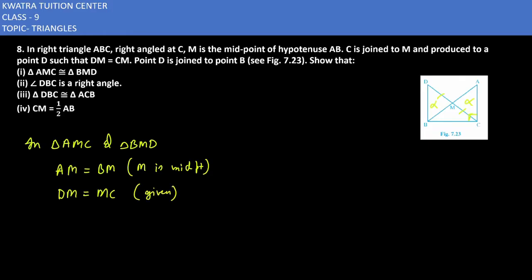And what can you take as the third thing? That vertically opposite angles are there. This angle would be equal to this one. So your angle DMB is equal to angle AMC, vertically opposite angles.